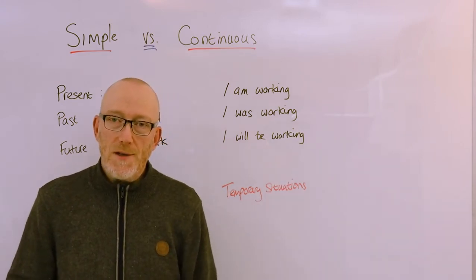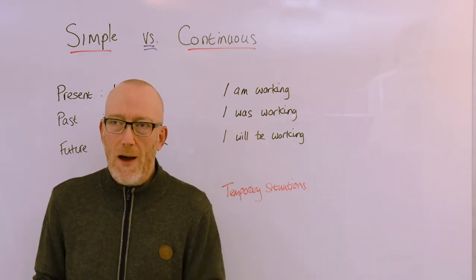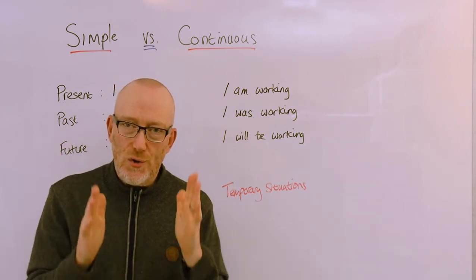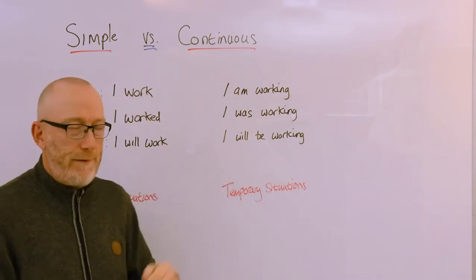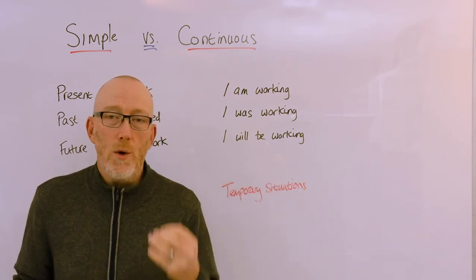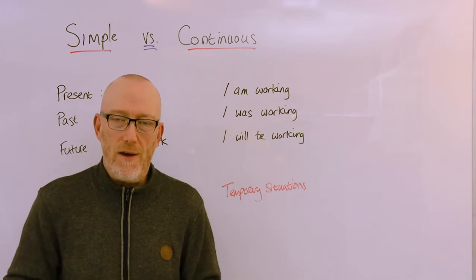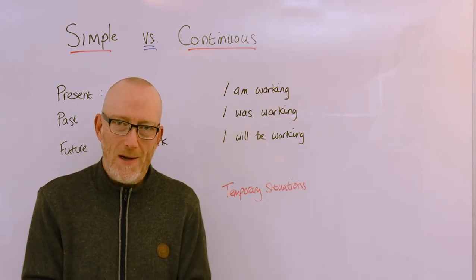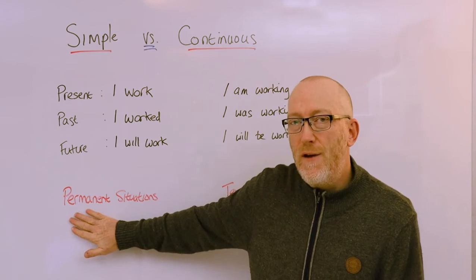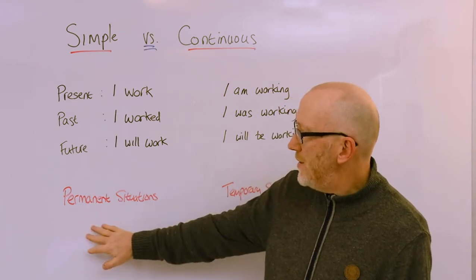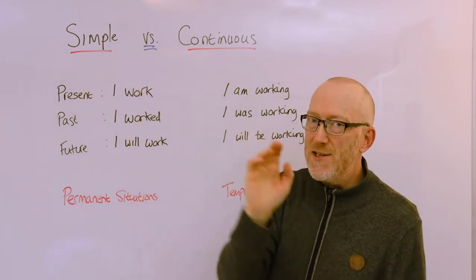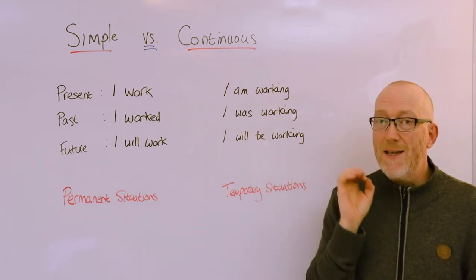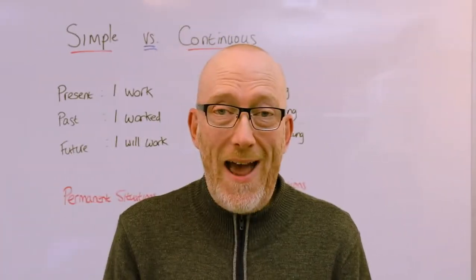Future continuous — "I will be working" — is used when you want to describe an action or activity tomorrow or next week that is only going to be short-term and temporary. For example: "Tomorrow I will be working on my next video lesson for you guys." It's not a permanent thing, it's just temporary. So: permanent or long-term situations use the simple tenses, and temporary or short-term situations use the continuous tenses.